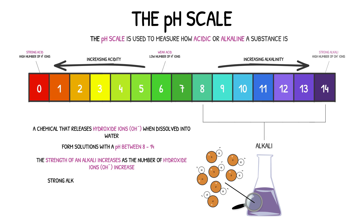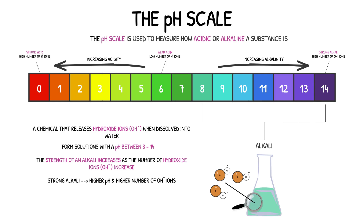The strongest alkali will have a pH of 14 and will release large numbers of hydroxide ions when dissolved into water, whereas the weakest alkali will have a pH of 8 and release small numbers of hydroxide ions when dissolved into water.